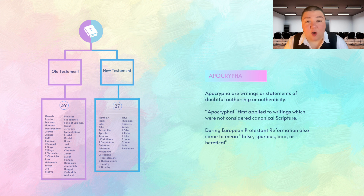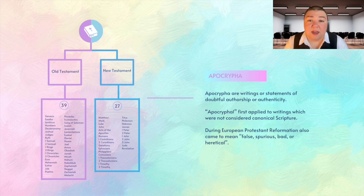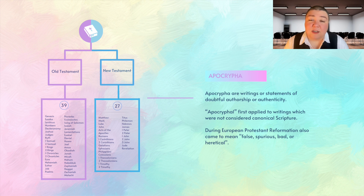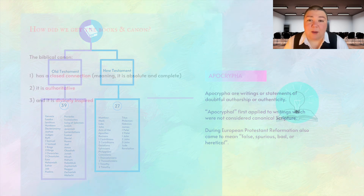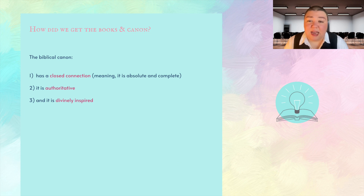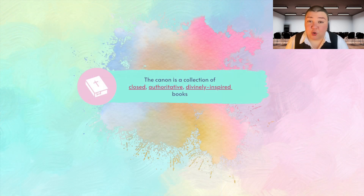There is a separate group of texts called the Apocrypha — writings or statements of doubtful authorship or authenticity. In Christianity, the word apocryphal was first applied to writings not considered canonical scripture, but in the wake of the European Protestant Reformation, it also came to mean false, spurious, bad, or heretical. The apocryphal texts have doubtful authenticity in comparison with the canon. In summary, the Christian belief is that the biblical canon has a closed connection — meaning it is absolute and complete — it is authoritative, and it is divinely inspired. The canon is a collection of closed, authoritative, divinely inspired books.